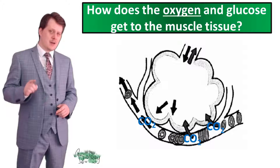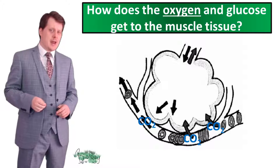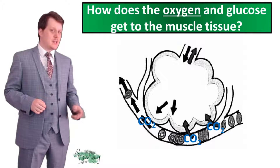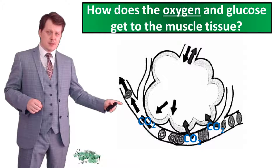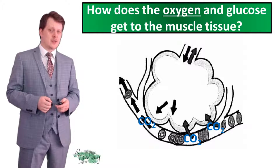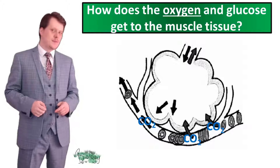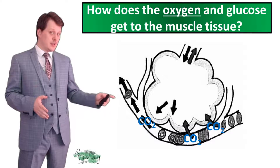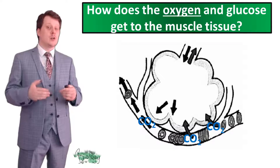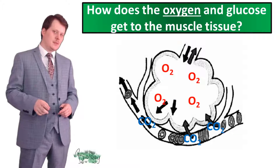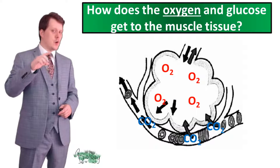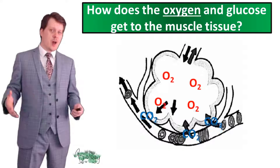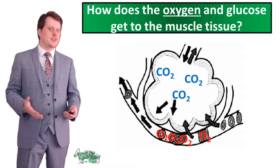So oxygen diffuses from an area of high concentration in the alveoli to an area of low concentration into the red blood cells. At the same time, carbon dioxide — our waste product of aerobic respiration — is dissolved in the blood plasma. There is a high concentration of carbon dioxide in the blood plasma but a small concentration in the alveoli, so carbon dioxide diffuses from the blood plasma into the alveoli. These two processes occur at the same time — this is why we call it gas exchange.